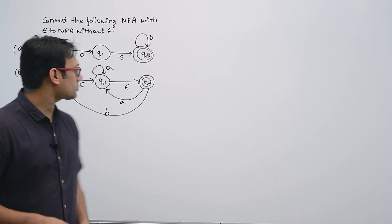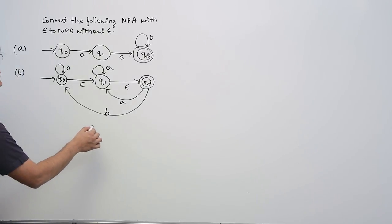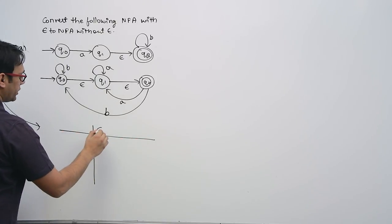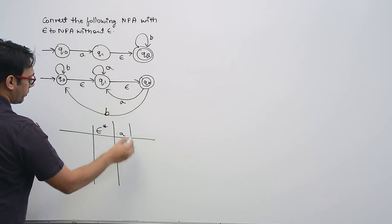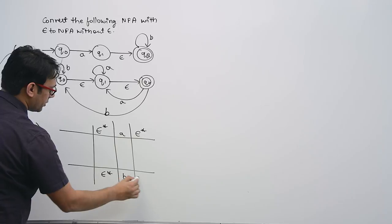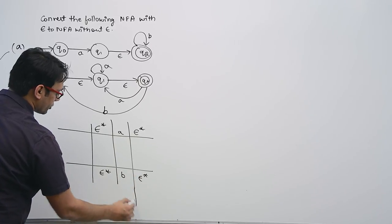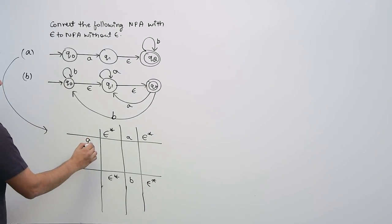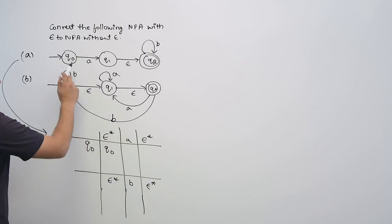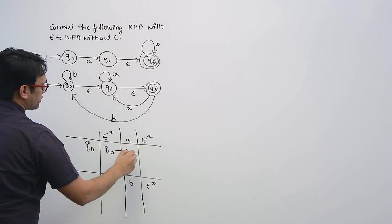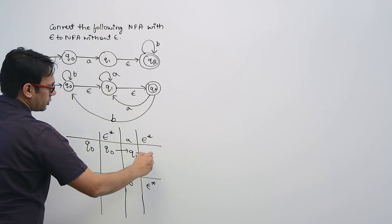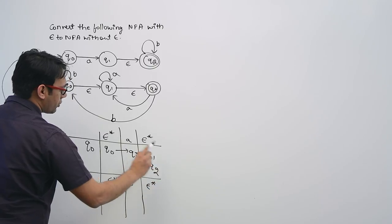For the first NFA, we will take the epsilon closure, then for symbol A we will take epsilon closure again. If you are at state Q0, then epsilon closure of Q0 is Q0 only. Now if you are seeing symbol A on Q0, then you will go to state Q1. The epsilon closure of Q1 is Q1 as well as Q2.